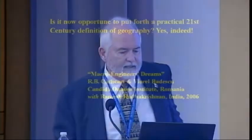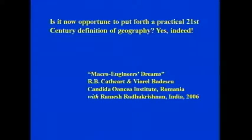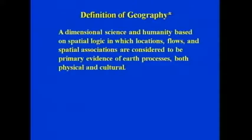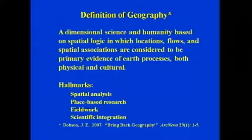I was strolling through the internet one day and ran across a paper called 'Macro Engineers Dreams' about geoengineering. They asked: is it now opportune to put forth a practical 21st-century definition of geography? And they said yes, and cited a definition by Jerome E. Dobson that they found useful. Here's that definition: geography is a dimensional science and humanity based on spatial logic in which locations, flows, and spatial associations are considered to be primary evidence of Earth processes, both physical and cultural. Its hallmarks are spatial analysis, place-based research, fieldwork, and scientific integration.